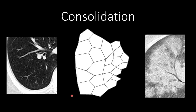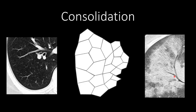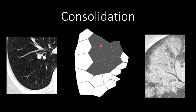Consolidation is complete alveolar filling, making it more dense than ground glass opacities. Here we have a normal lung, nice and black with vessels and airways easily seen, compared to a lung with diffuse consolidation in a patient with ARDS or acute respiratory distress syndrome. Within consolidation you start to see airways as air bronchograms, and you no longer see distinct vessels within the area of consolidation.